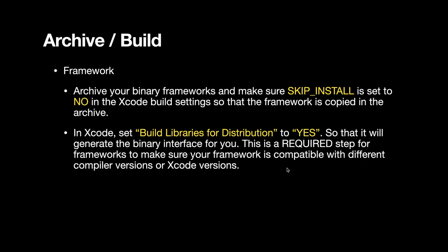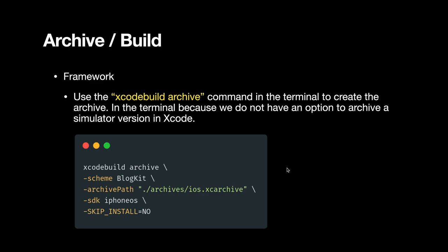For frameworks — for instance if you created a Swift framework — you would want to archive it before creating an XCFramework. There are two things to remember. Make sure that Skip Install is set to No and Build Libraries for Distribution is set to Yes. Setting Skip Install to No will enable a copy of your framework to be copied into the products folder of your archive. Enabling Build Libraries for Distribution to Yes will generate the binary interface when archiving the framework.